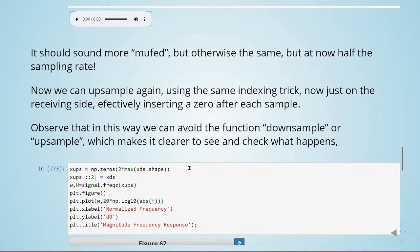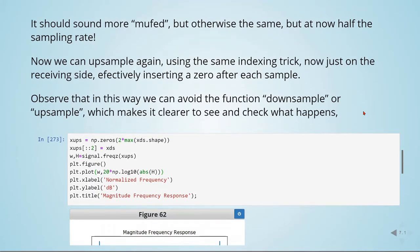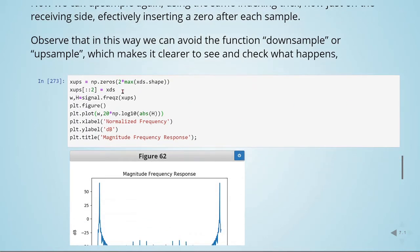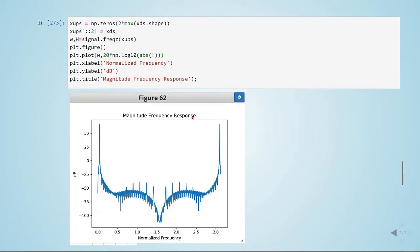We can use this indexing trick. Now just on the receiving side, we are in fact inserting a zero after each sample. Observe that in this way we can avoid the function downsample or upsample, which makes it clearer to see and check what happens. Here now we have the upsampled version of our signal.